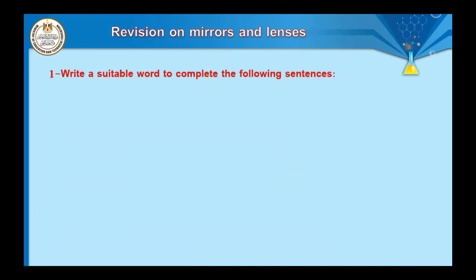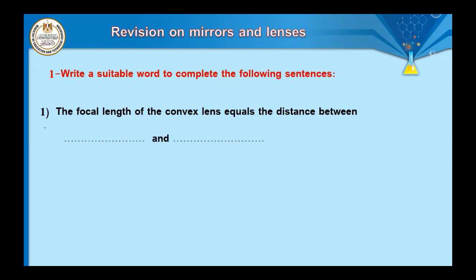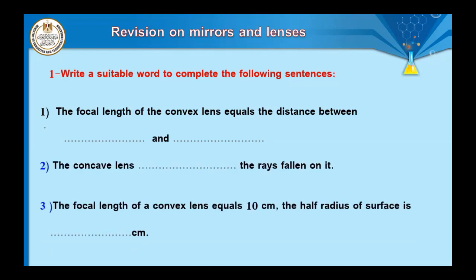Question number one: write a suitable word to complete the following sentence. The focal length of a convex lens equals the distance between ___ and ___. The answer: focal length equals the distance between the optical center and the focus. The optical center is a point inside the lens, while the focus is the point of collection of refractive light rays of a convex lens.